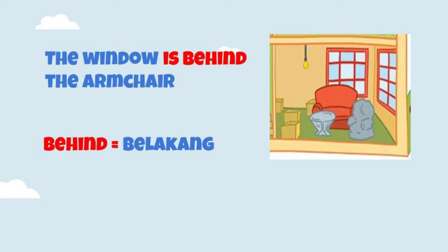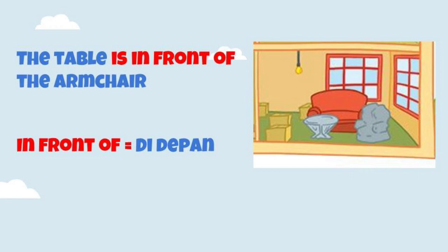Okay friends, please look at the picture. Perhatikan gambarnya. Where is the window? Dimanakah letak jendela? Yes, good job. The window is behind the armchair. Jendela itu ada di belakang sofa. So friends, 'behind' artinya di belakang. Okay friends, look at this picture. Where is the table? Dimanakah letak meja? The table is in front of the armchair. Meja itu ada di depan sofa. So friends, 'in front of' artinya di depan.